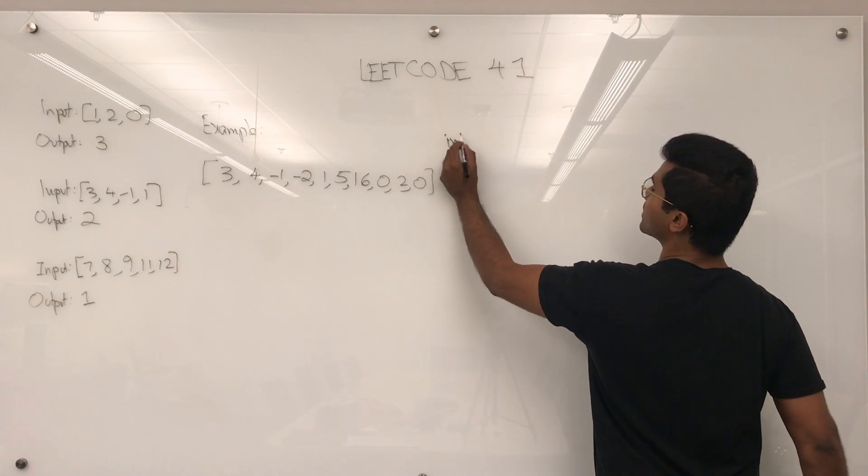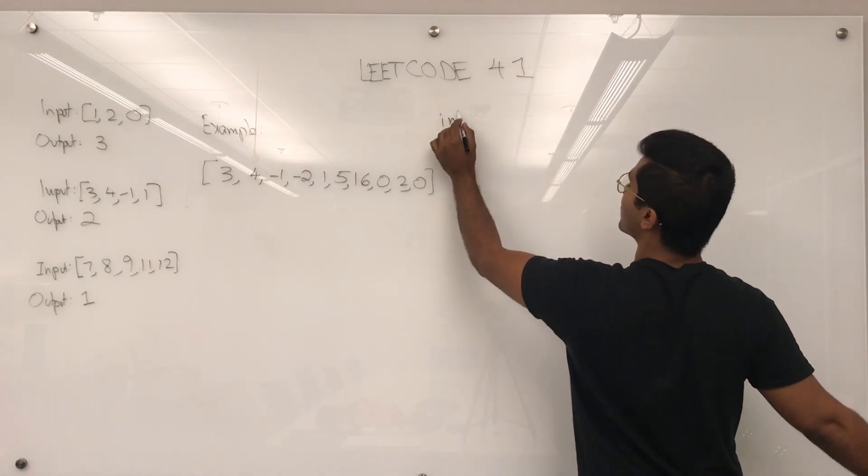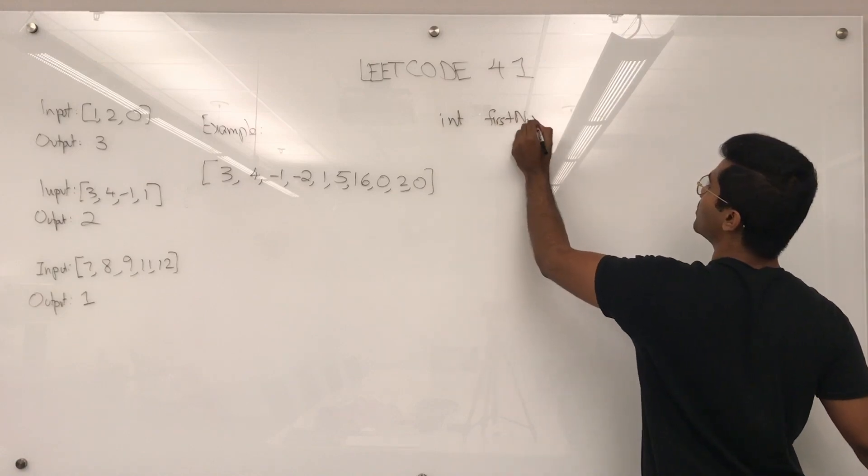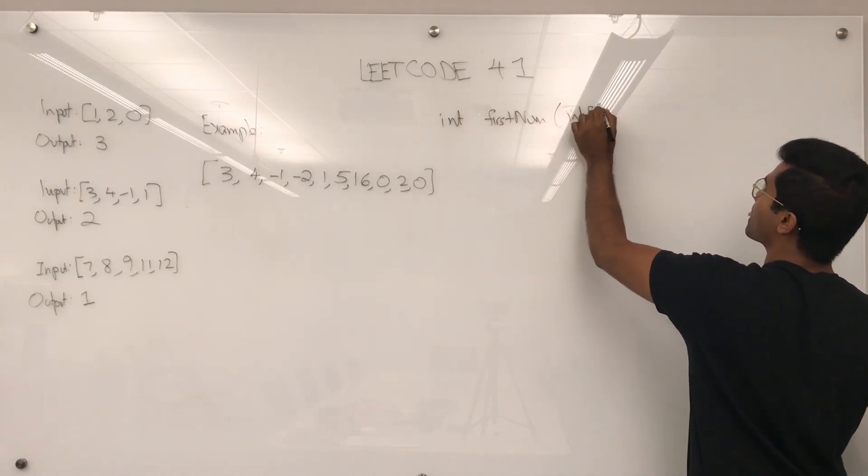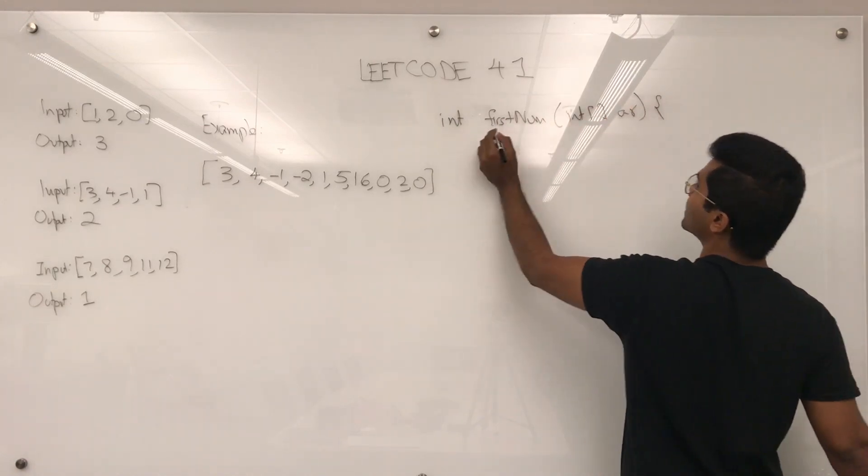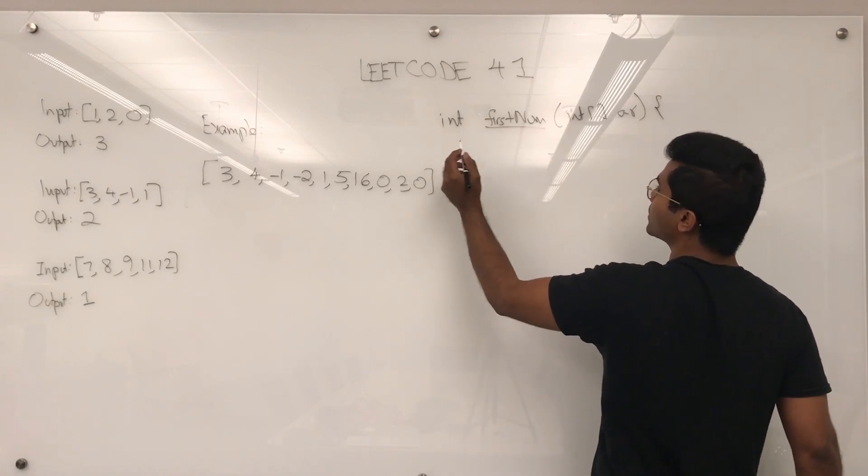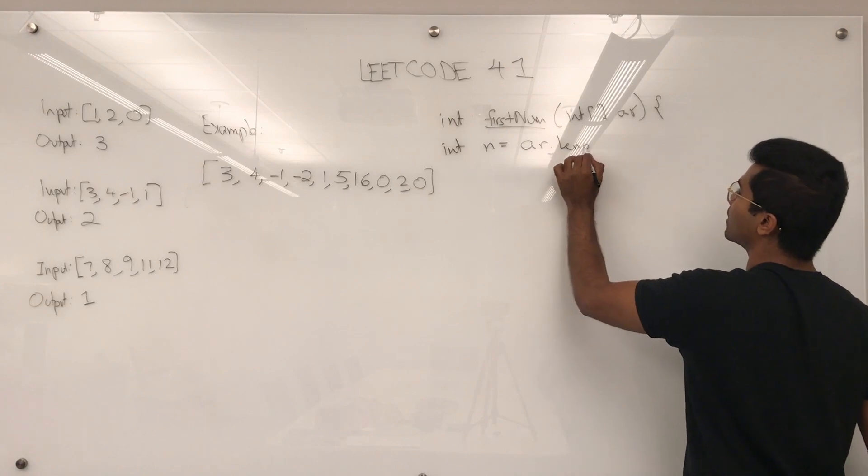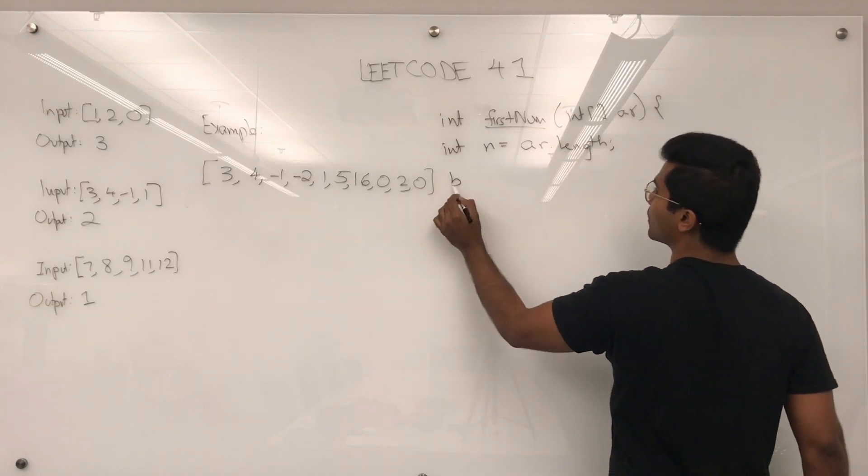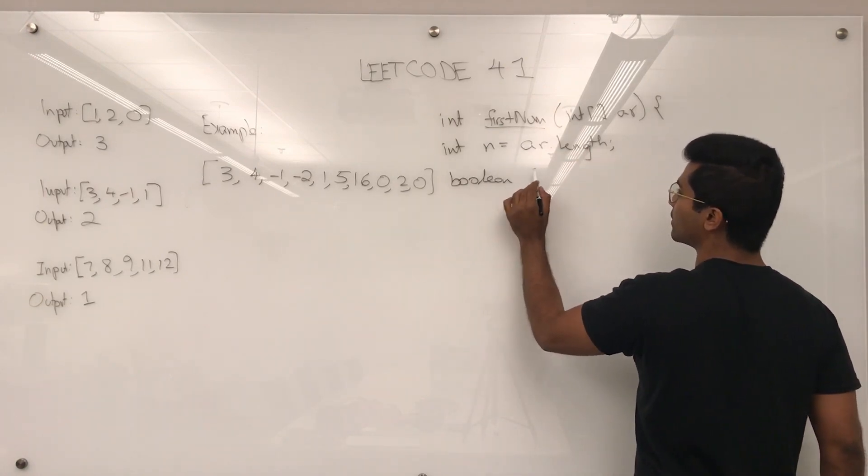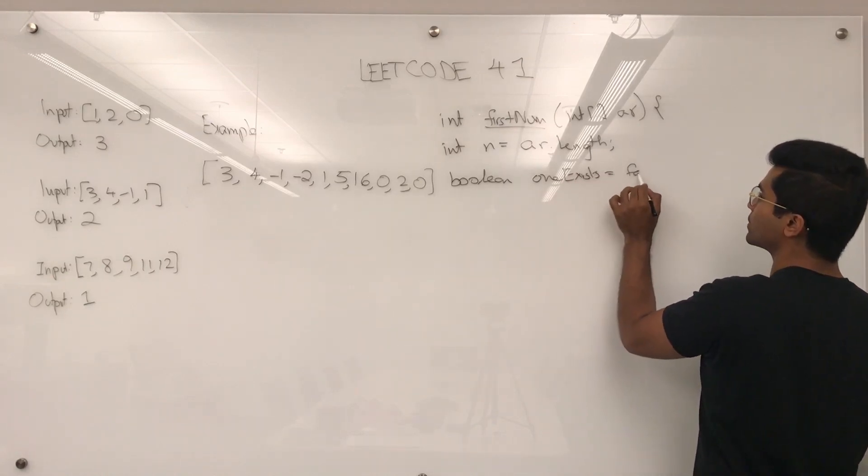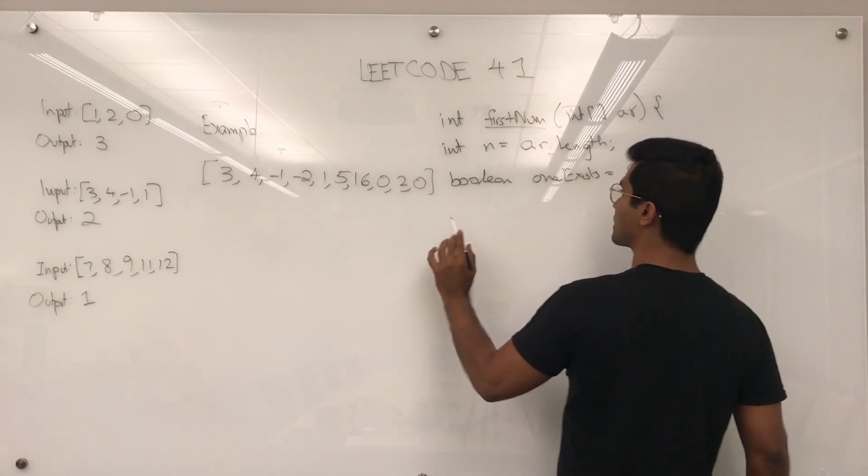First, let's say they give us an array. This is going to be the integer, first num int array. What we need to first do is take the length of it. Int n equals array.length. And then we have to write boolean. We have to first check if 1 exists. We're going to first assume it doesn't exist.